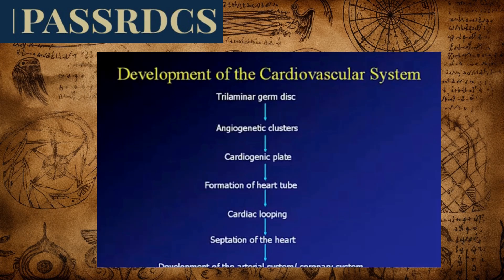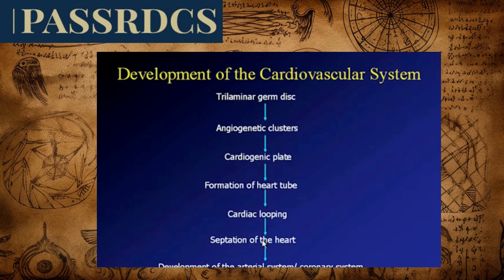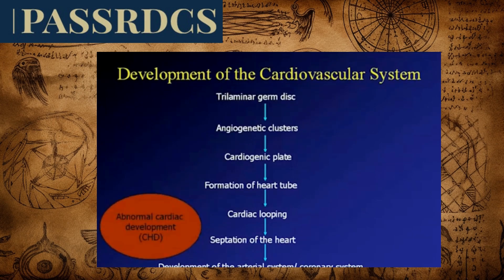Let's start with a discussion about early cardiac development. Cardiac development goes through a number of different phases. We start with just the early germ disc, form some angiogenic clusters — the primitive cardiovascular system — then form a plate which finally wraps into a tube. Then we start to have looping, septation, and the rest of the structures fall into place. In this lecture, we'll look briefly at those different aspects of development and discuss some of the pathologies that may occur at each point.